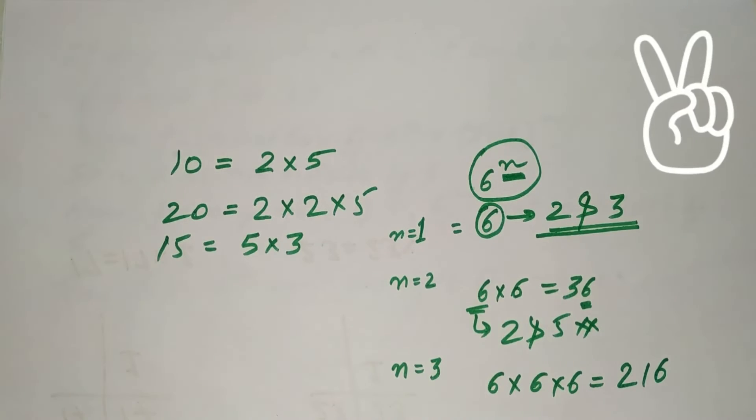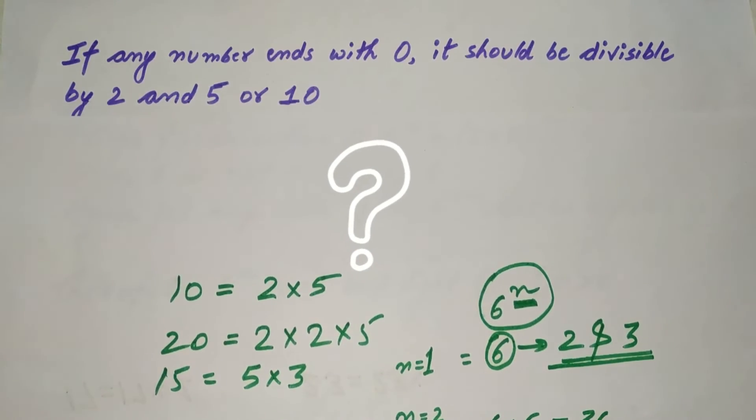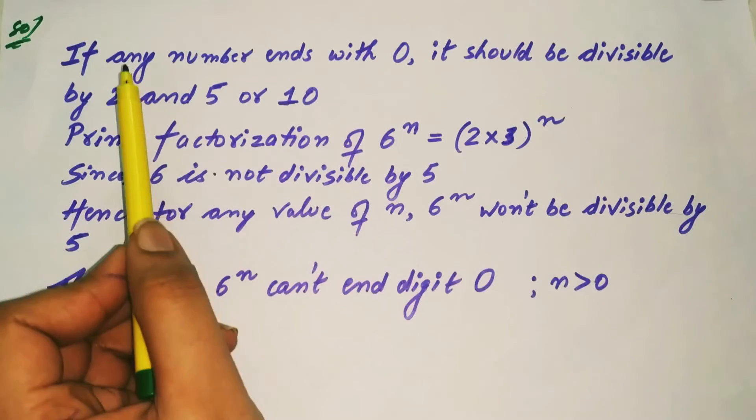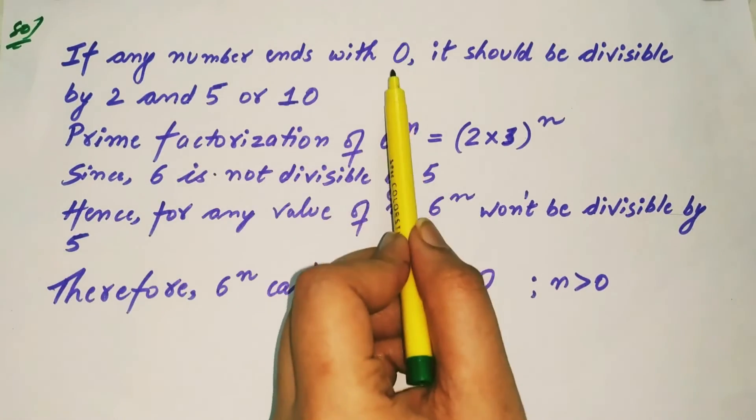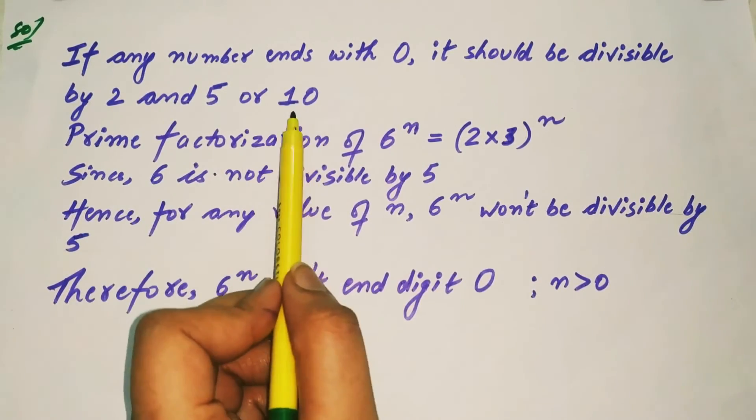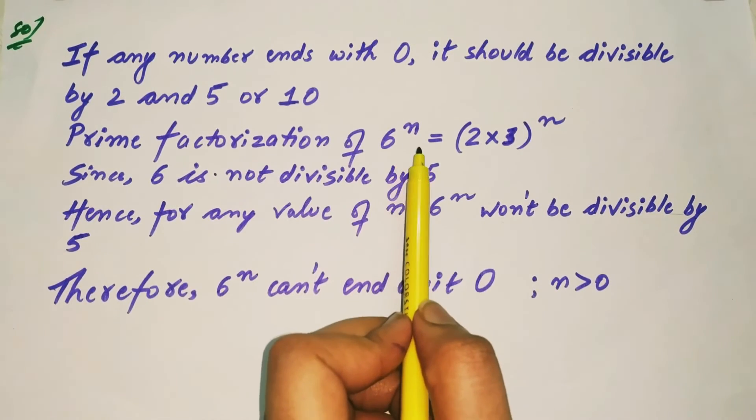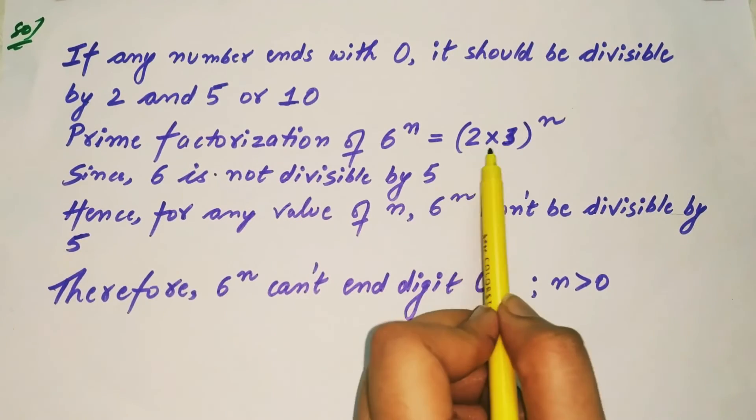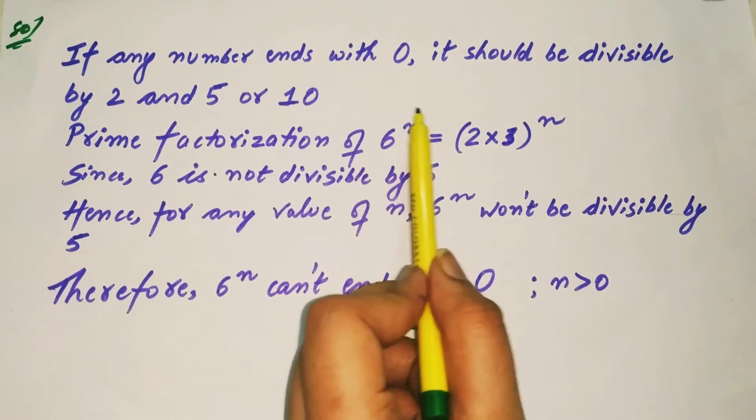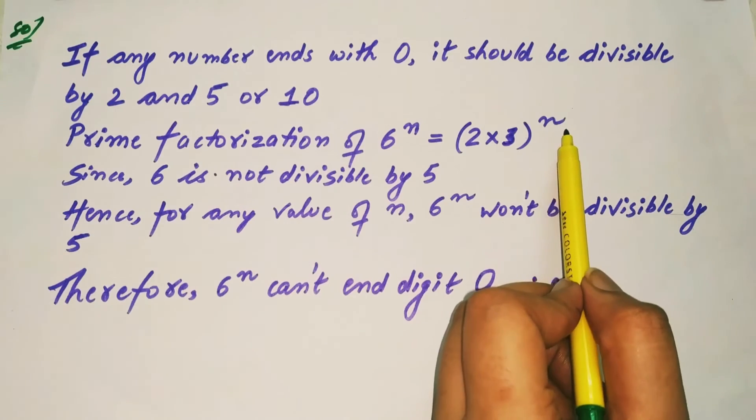So now you know everything to solve the question. So how will we write down in the exam? If any number ends with 0, it should be divisible by 2 and 5 or 10. Prime factorization of 6 or prime factors of 6 are 2 and 3. 6n can be expressed as 2 multiplied by 3 raised to the power n.